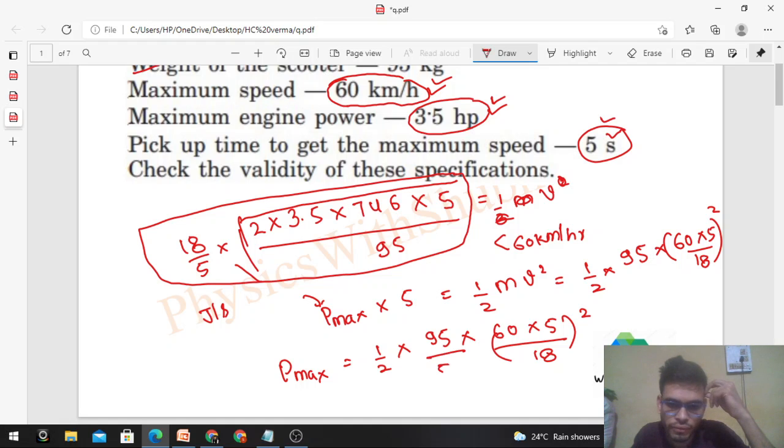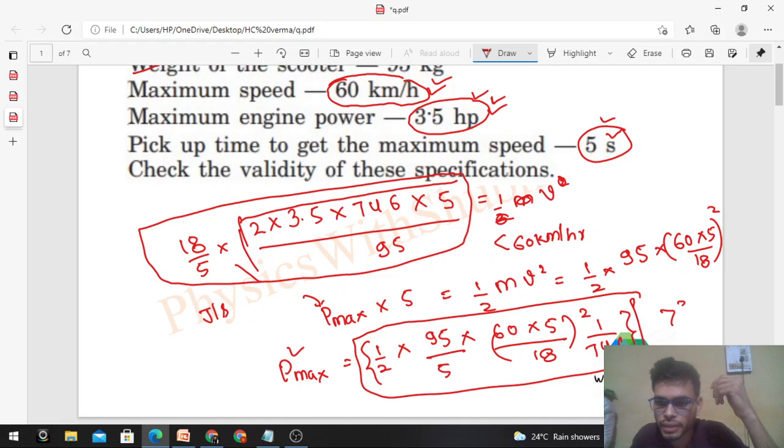Divided by 5, and the power will be in joule per second, so you have to divide it with 746. This value you have to compare with 3.5 hp. If this value is greater than 3.5 hp, you can say that the specifications are overrated.